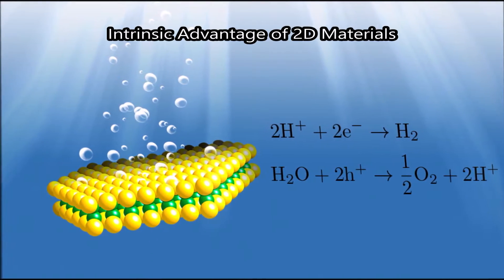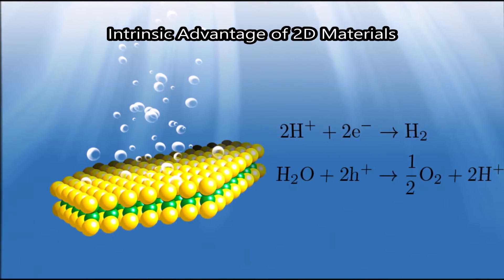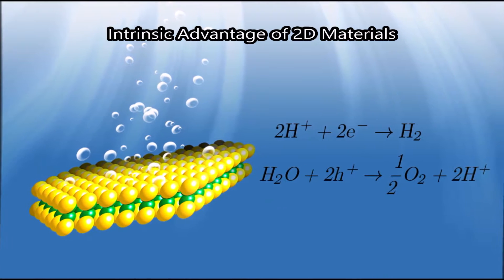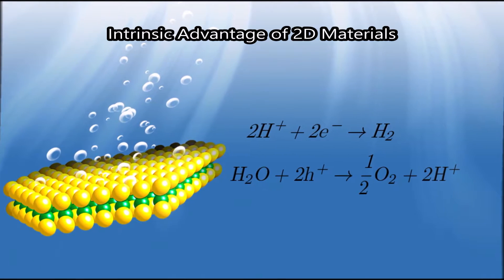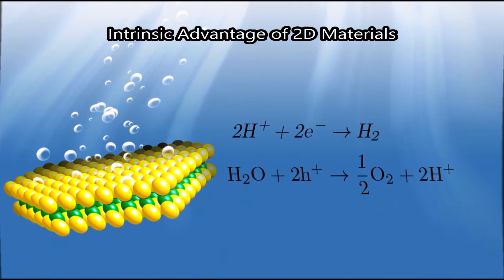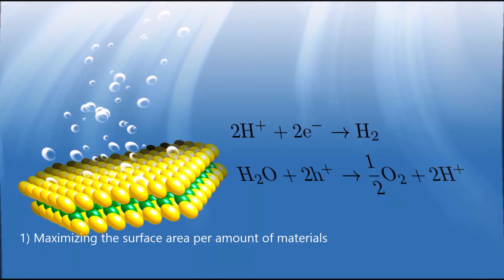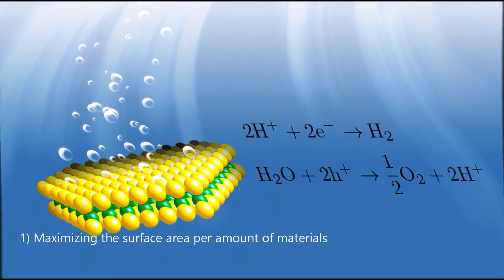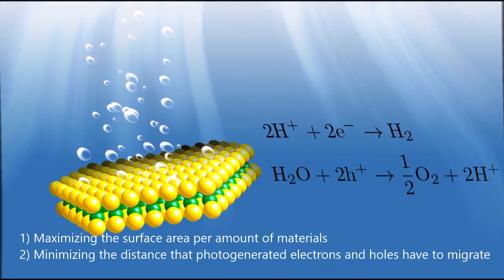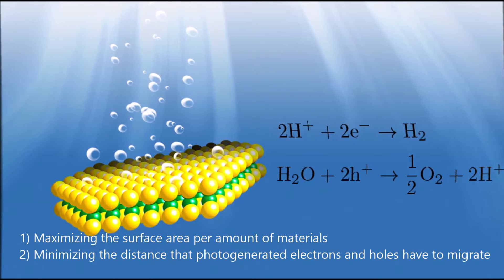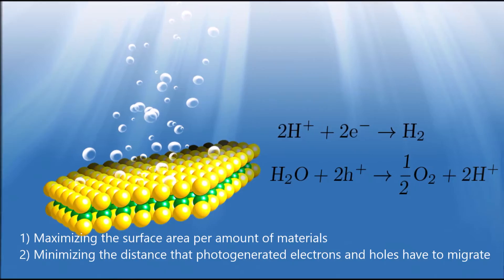In comparison to bulk materials, two-dimensional materials stand out with two main intrinsic advantages that can be used to enhance the photocatalytic efficiency of water splitting. First, maximizing the surface area per amount of material and second, minimizing the distance that photogenerated electrons and holes have to migrate.